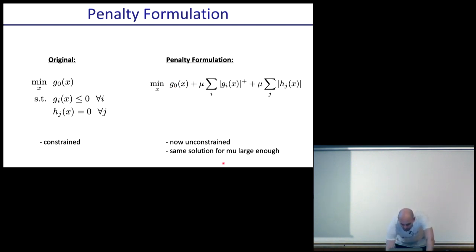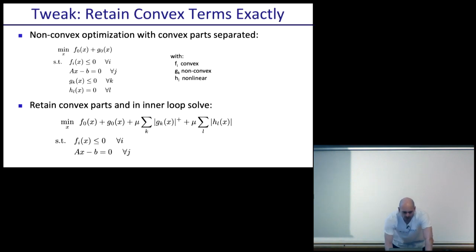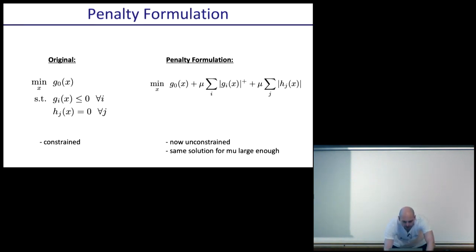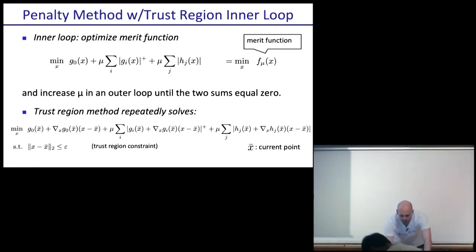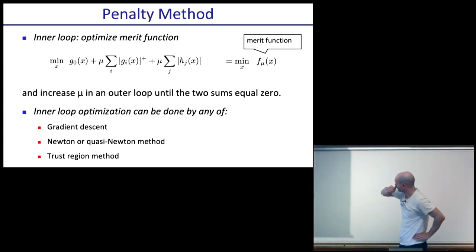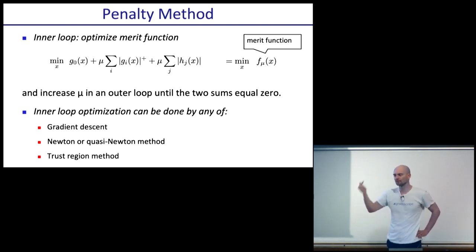We broke it down into a detailed implementable algorithm. A tweak often used: once we saw this formulation, there are a few ways of solving it. One is gradient descent on this objective, then increase mu and repeat. Another is a quasi-Newton method — when you've optimized x for a fixed mu, increase mu and repeat. Or you could do a trust region method.